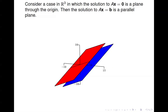In three dimensions, if the solution set is a plane, then for AX equals 0 it's a red plane through the origin, and for AX equals B you get a parallel plane displaced off the origin.